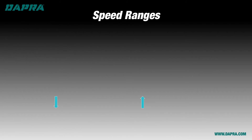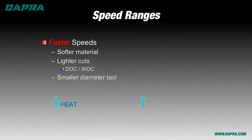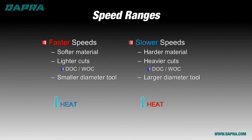You may be able to run on the faster end of the speed ranges if you're cutting softer material, taking lighter cuts in width or depth, or using a smaller diameter tool — all of these create less heat. On the flip side, you may need to run in the lower end of the speed range if you're cutting a harder material, programming with heavier depth or width of cut, or using a larger diameter tool, because all of these create more heat and can negatively affect tool life.